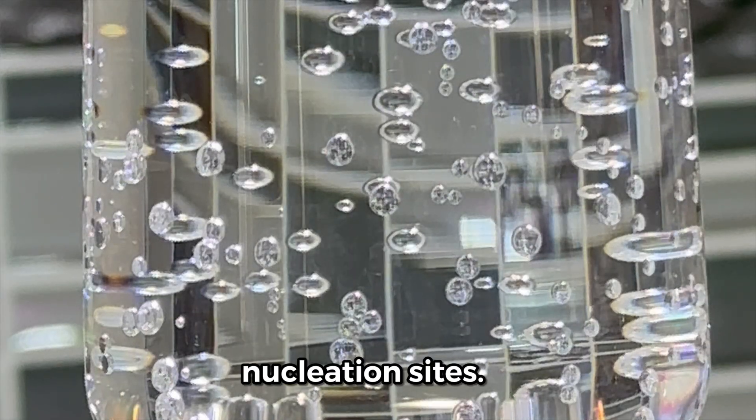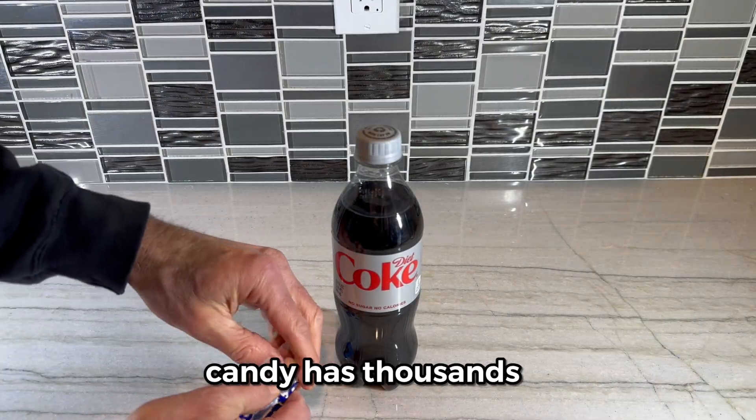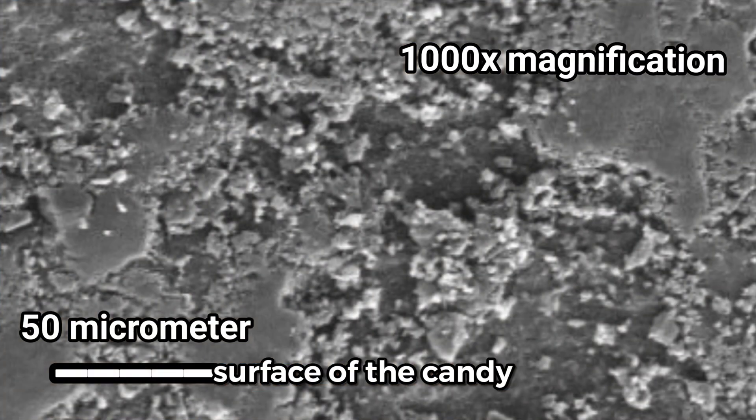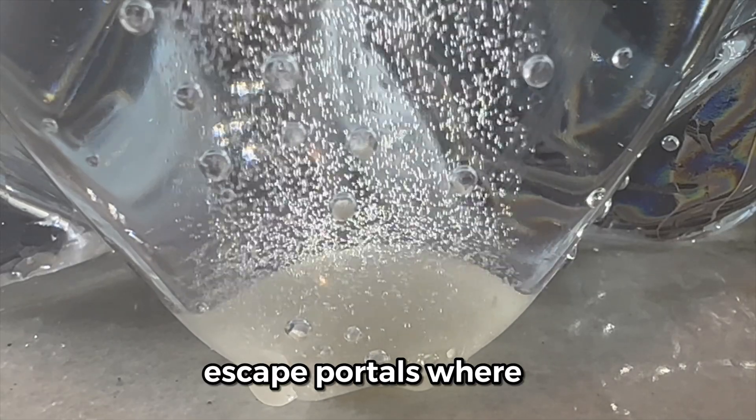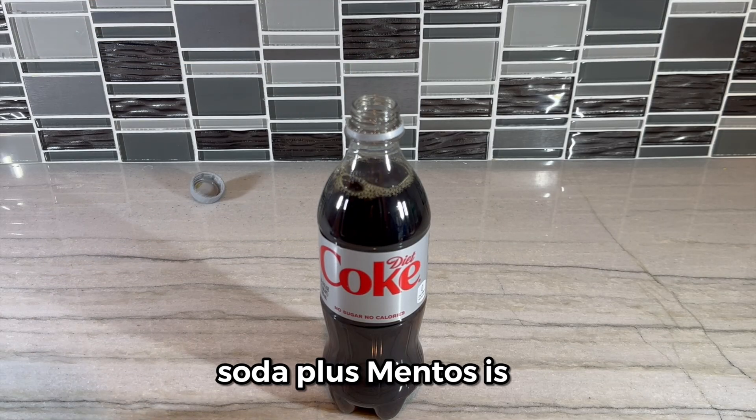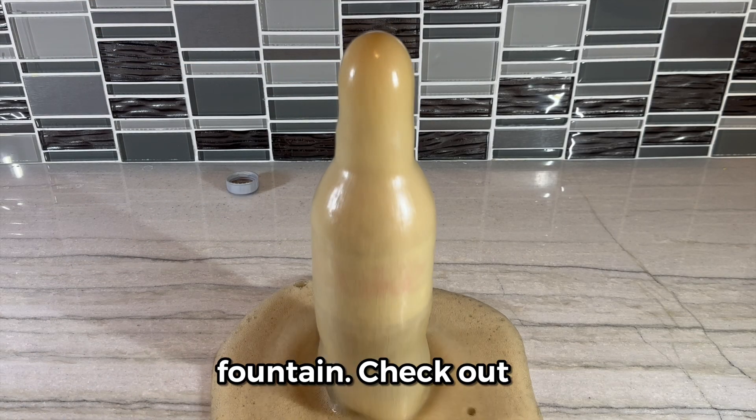And these bubbles are created at nucleation sites. Like this. A Mentos candy has thousands of nucleation sites. These are pits and pockets on the surface of the candy that act like escape portals where carbon dioxide can exit the soda as a gas. So naturally, soda plus Mentos is a fun foamy fountain.